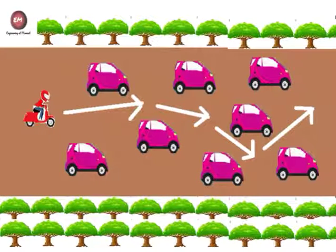To understand electrical resistance in a better way, we will take an example of a pizza delivery boy going to his destination to deliver a pizza. In his path, he encounters traffic due to many cars, so he has to lower his speed to reach the destination. He has to go between the gaps of the cars to reach his destination. The cars are offering resistance to the pizza delivery boy, restricting him in his path.